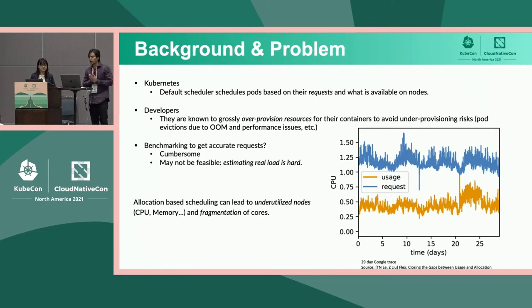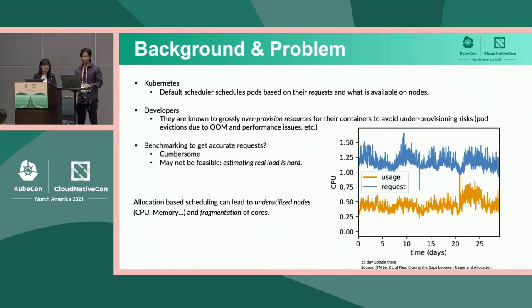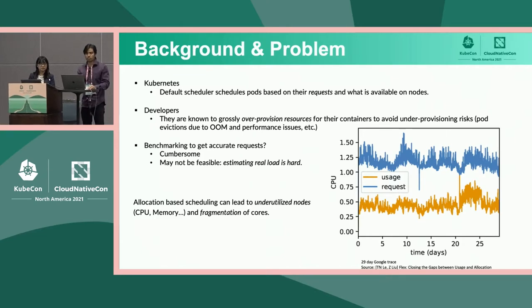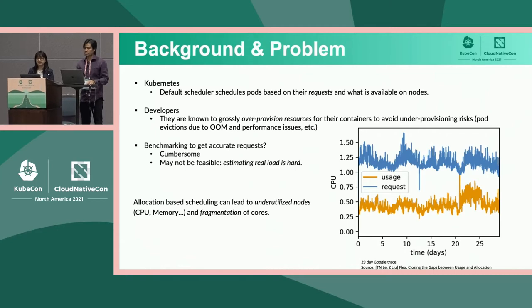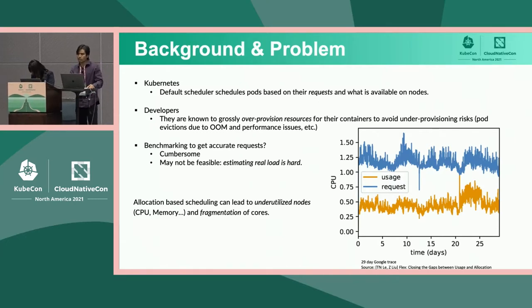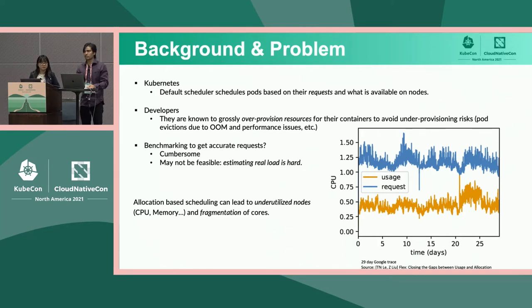As many of you may know, Kubernetes provides a declarative resource model for its pods. What I mean by declarative model is that the resource usage you define for your pod or container needs to be defined in a spec before you're able to run your workload. The core components in Kubernetes — namely the kubelet and the scheduler — honor it to behave consistently with respect to the quality of service guarantees. Given this, developers tend to over-provision resources, partly to avoid the penalties of evictions and CPU throttling that Kubernetes would impose. One way to solve this is to benchmark your applications, but estimating real load is hard.